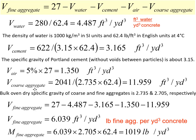The last component is the volume of coarse aggregate, calculated in a similar way as the volume of cement. We take the mass of coarse aggregate from the previous step and divide by the density of coarse aggregate, which is the specific gravity of coarse aggregate times the density of water at 4 degrees Celsius. Note that when we use the specific gravity of coarse aggregate we used the oven-dry specific gravity, so we are assuming the coarse aggregates are dry, which may not be true as they may have moisture content.